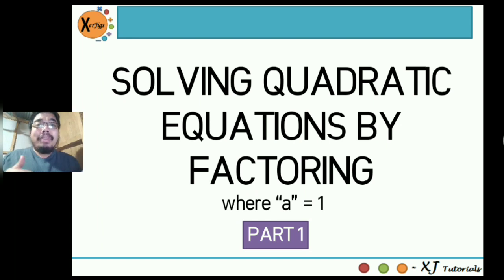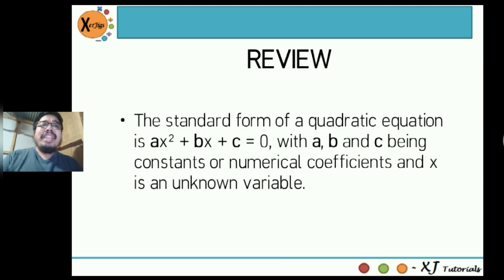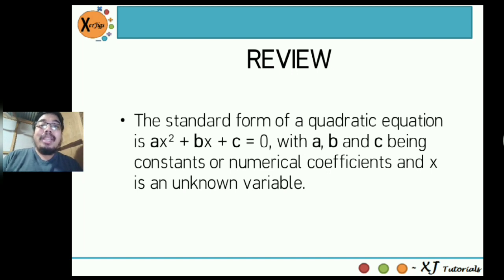Our topic on factoring is divided into two parts. The first part covers quadratic equations where the leading coefficient, or a, is equal to 1. But first, let's review. The standard form of the quadratic equation is ax² + bx + c = 0, where a, b, and c are your numerical coefficients, and x is your unknown variable.